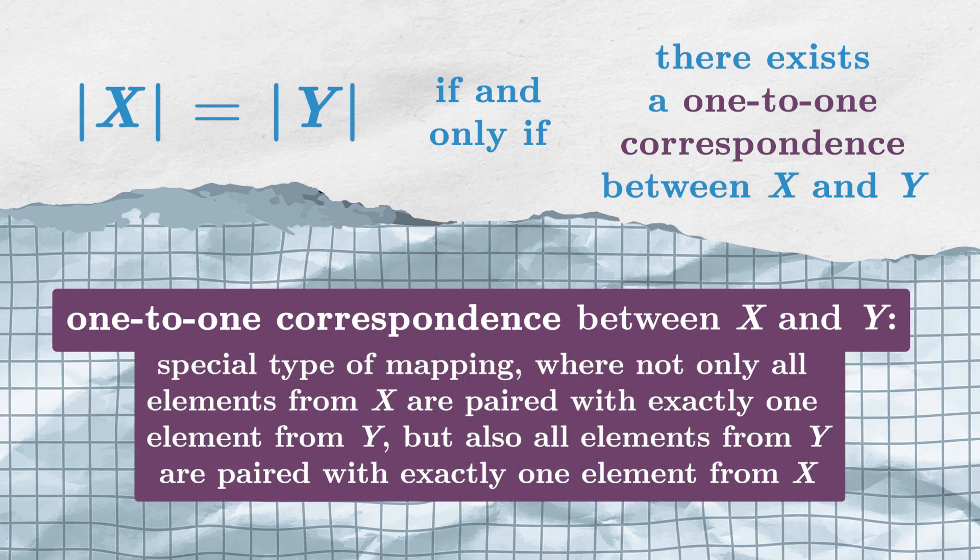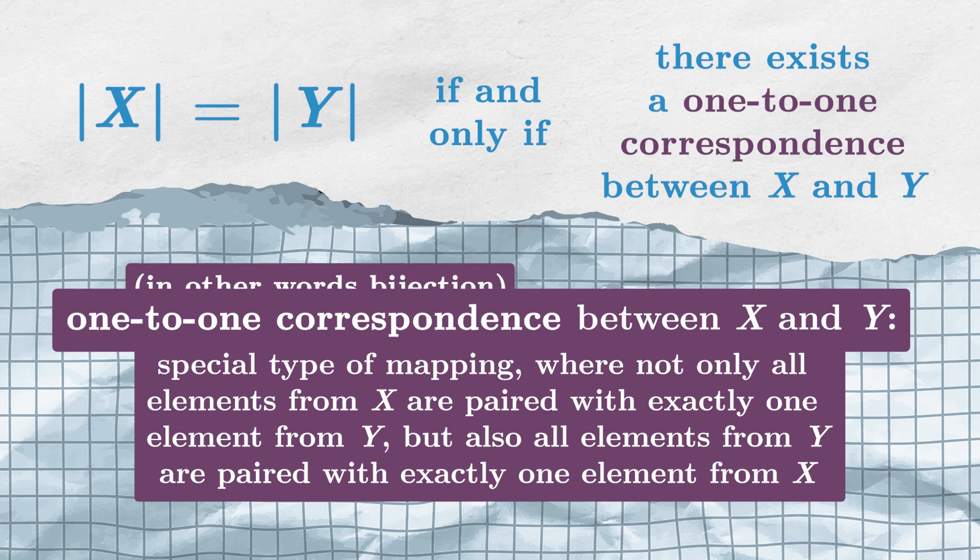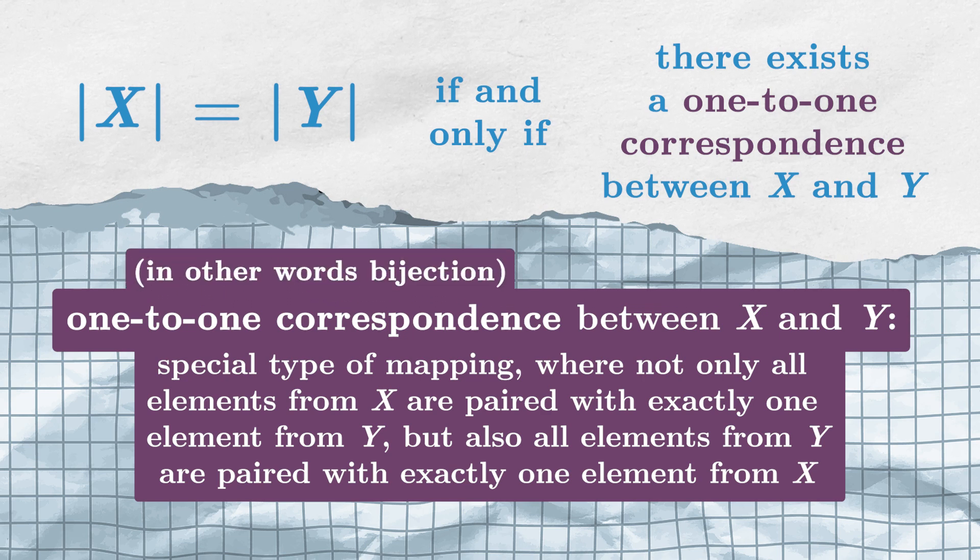A 1 to 1 correspondence is a special type of mapping, where not only all elements from x are paired with exactly one element from y, but also all elements from y are paired with exactly one element from x. Such 1 to 1 correspondence, or in other words bijection, is an ideal pairing between elements from x and y, because no element from x or y is left unpaired.